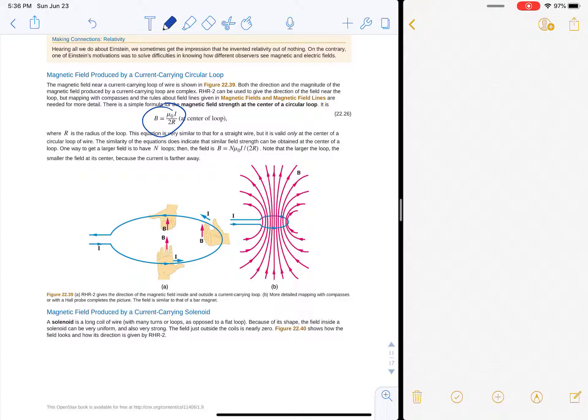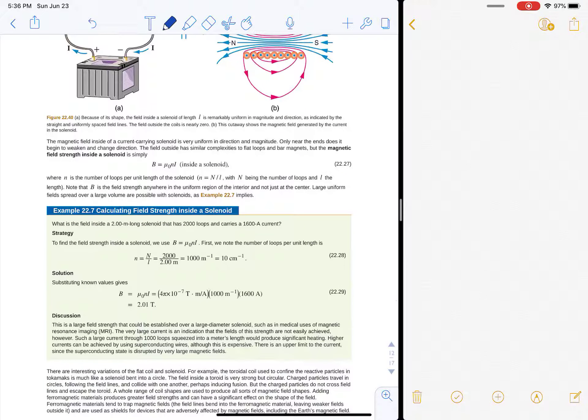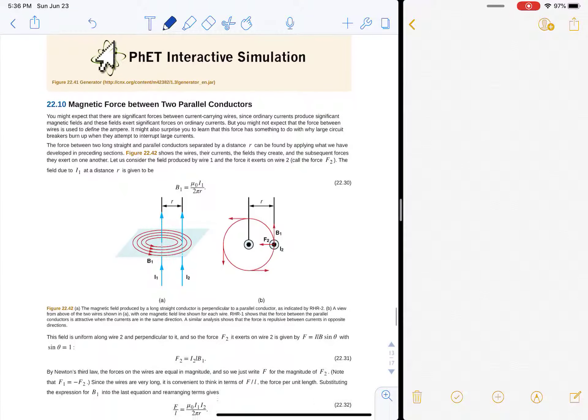So, if you've got a loop of wire, mu naught i over two r, will tell you the strength at the center of the loop, the way this all adds up. Okay, a solenoid, what is a solenoid? A solenoid is a loop of wire all hooked up to basically amplify the magnetic field, create a nice uniform magnetic field in the center of this thing. That's the goal of a solenoid usually, and that for a solenoid is just mu naught n i, where n is the number of loops, so it simplifies down there a little bit.